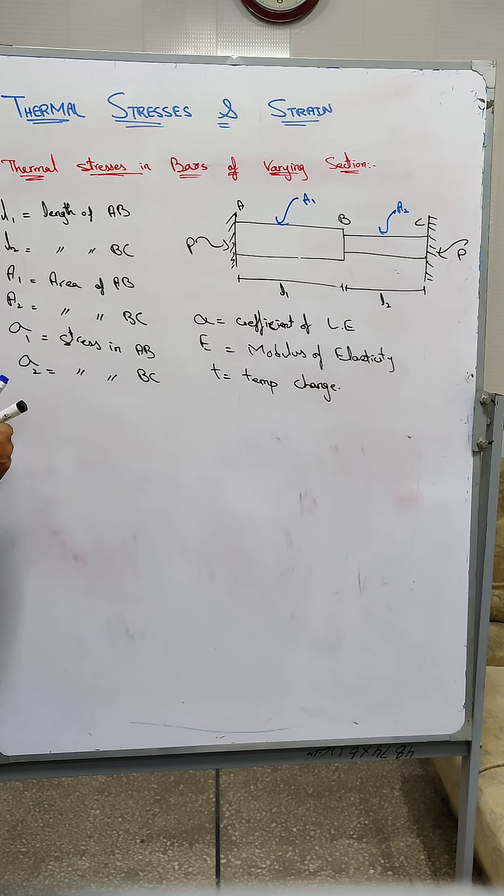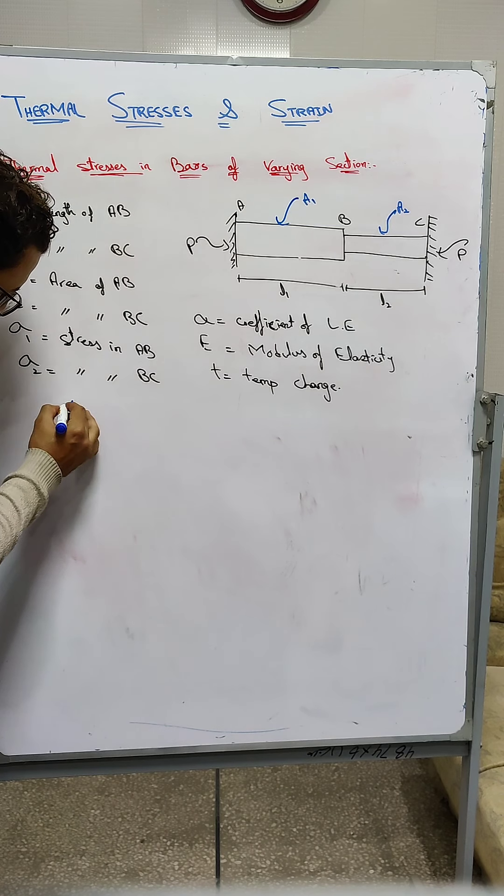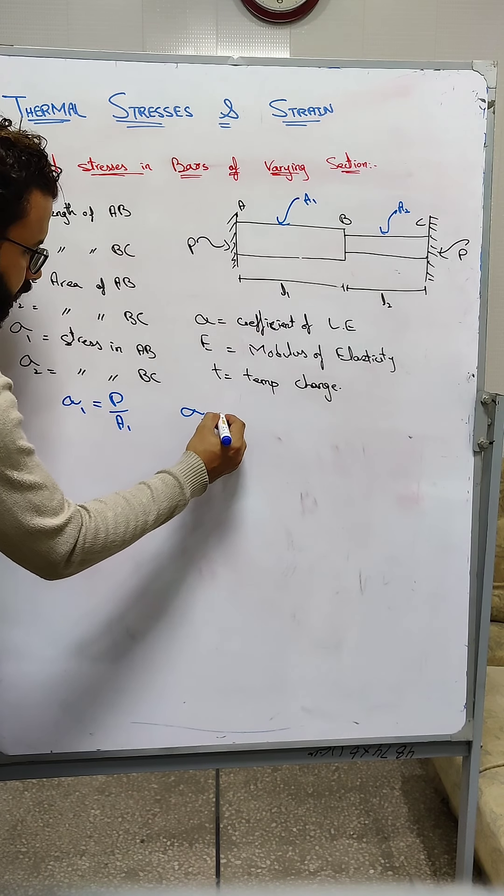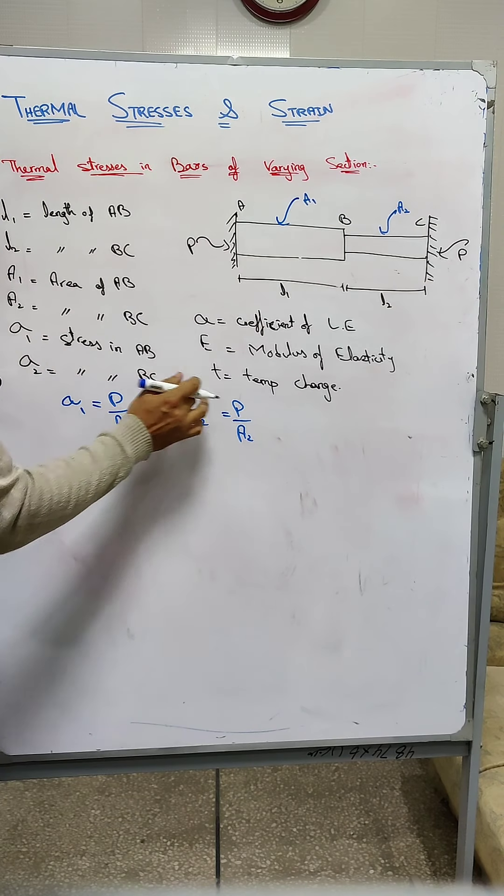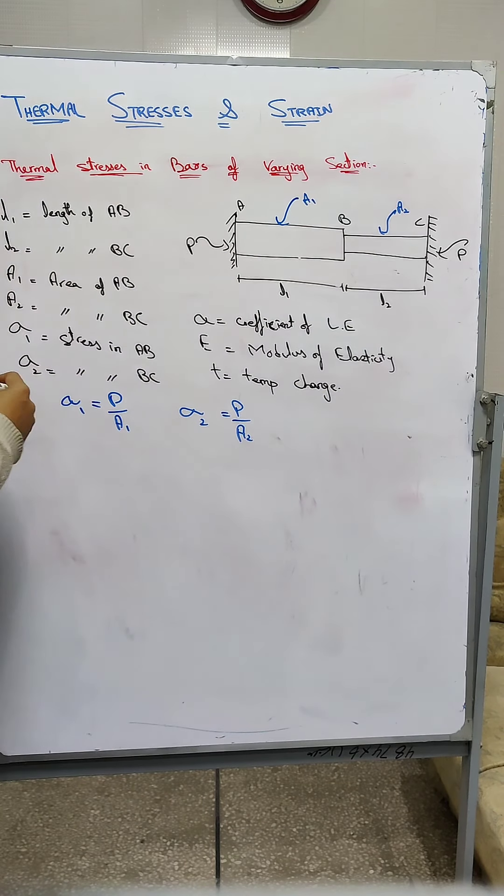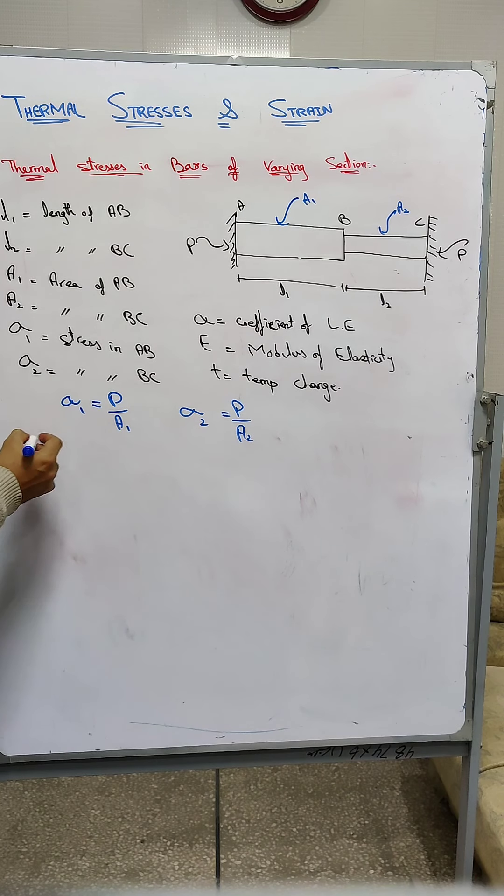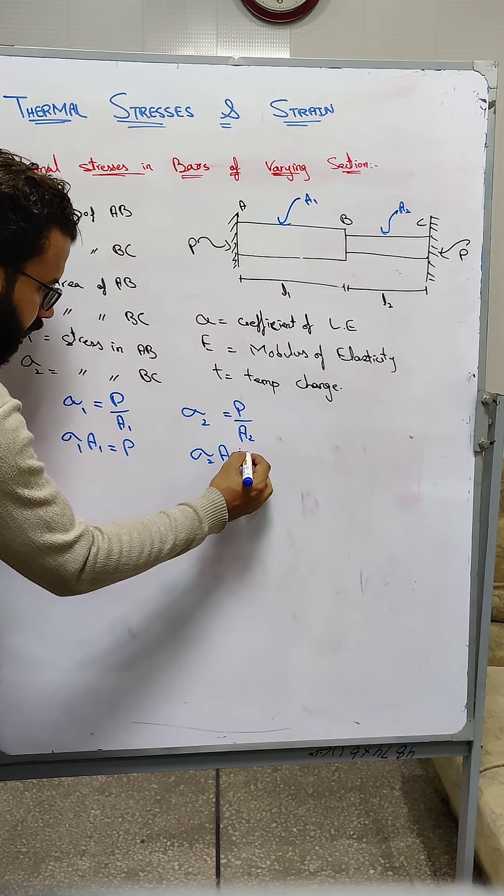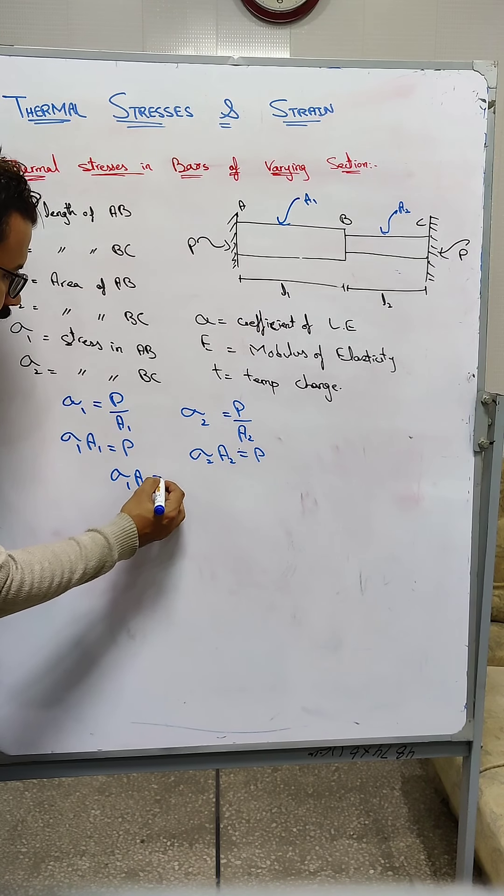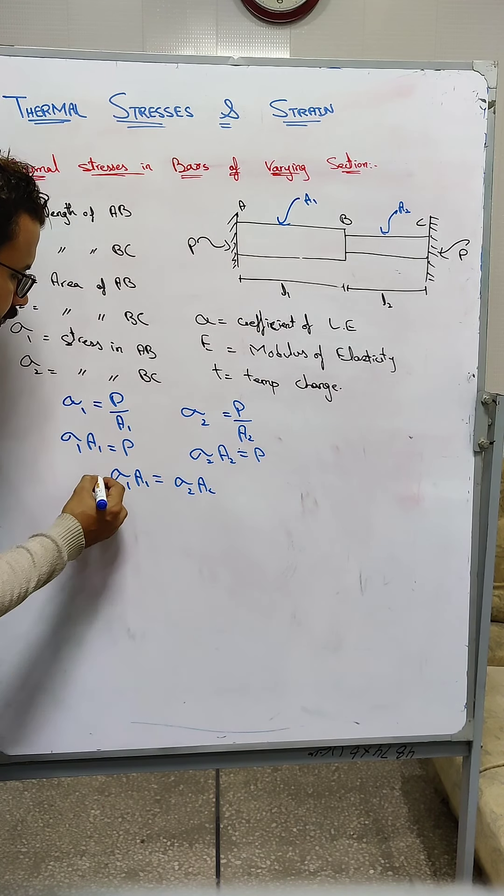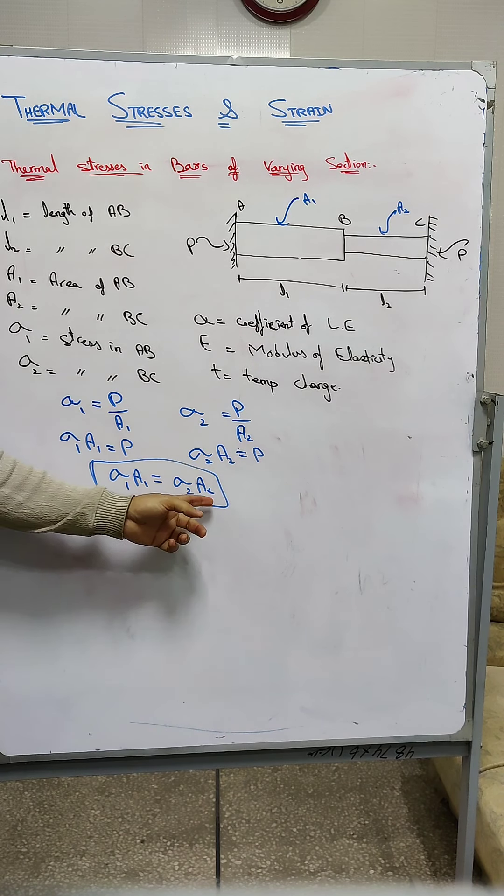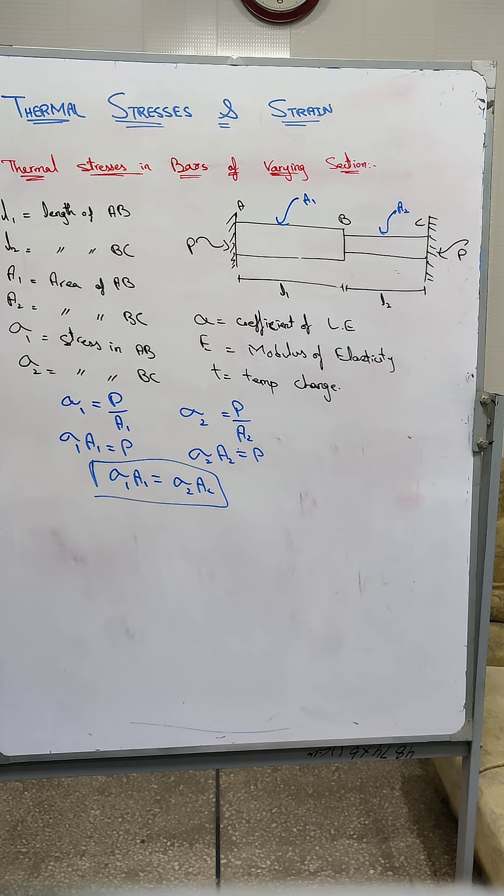Sigma 1 will be equal to P over A1. Sigma 2 will be equal to P over A2. Both forces are the same because they are uniform. So sigma 1 times A1 is equal to P, and sigma 2 times A2 is equal to P. We can say sigma 1 times A1 equals sigma 2 times A2. Stress into area of 1 equals area of 2. This is equation 1.